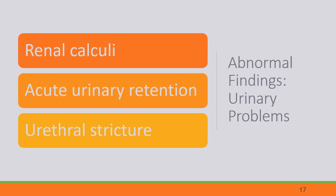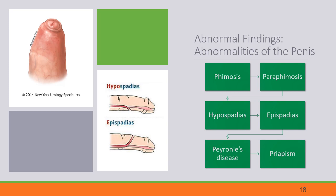Acute urinary retention can occur from a stone, blockage, tumor, or often from the prostate itself — the treatment is usually Foley catheter placement. Lidocaine should always be used for a male before Foley placement, if not allergic, to help ease the passage and get past the prostate with less pain and spasm. Urethral stricture is a closing or narrowing of the urethra within the penis that causes decreased flow, difficulty starting a stream, difficulty emptying the bladder, and high risk for urinary tract infections.